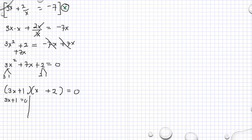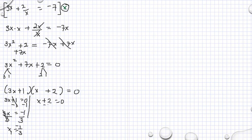3x plus 1 is equal to 0. Subtracting both sides of the equation by 1. Then we have 3x is equal to negative 1, divided by 3. Then x is equal to negative 1 divided by 3. That's our x sub 1. Then x plus 2 is equal to 0. Subtracting both sides by 2, we have x sub 2 is equal to negative 2.